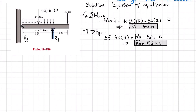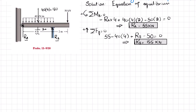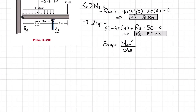With both reaction forces known, we move toward the shear force and bending moment diagrams. We need these because the required section modulus equals maximum bending moment divided by allowable stress, and we don't yet have the maximum bending moment.